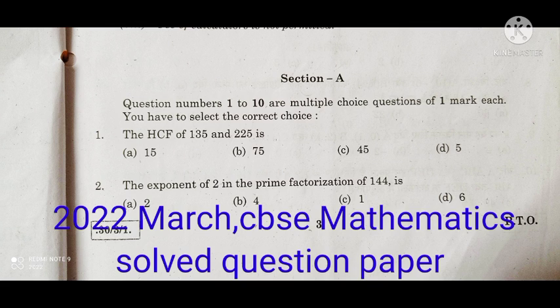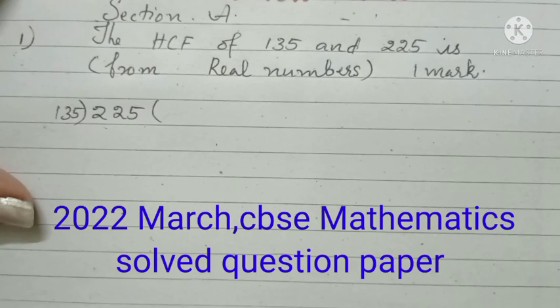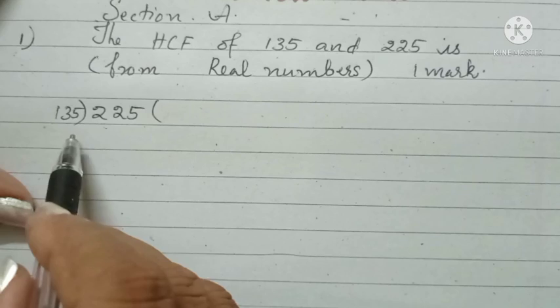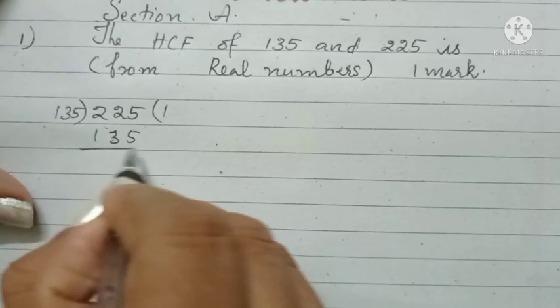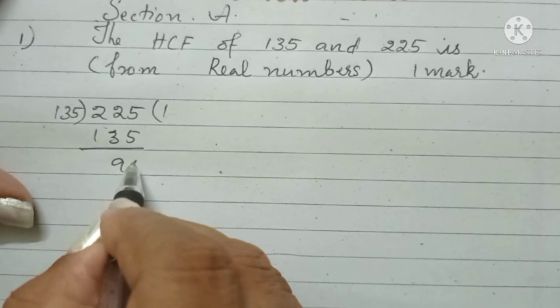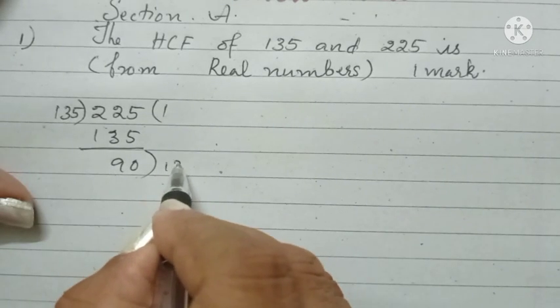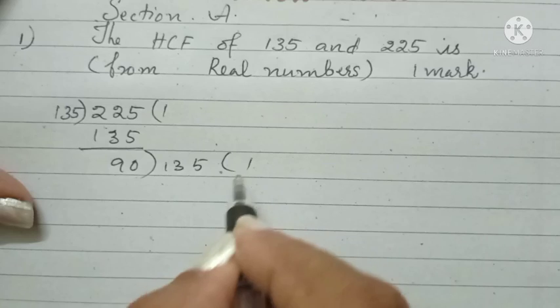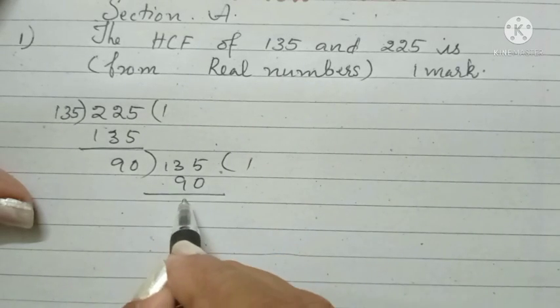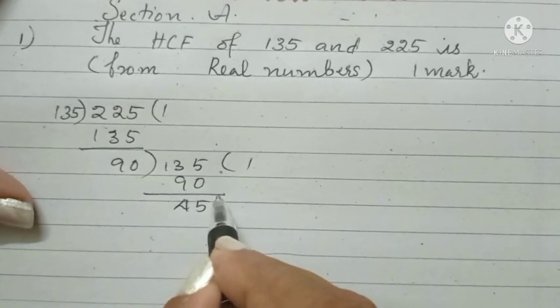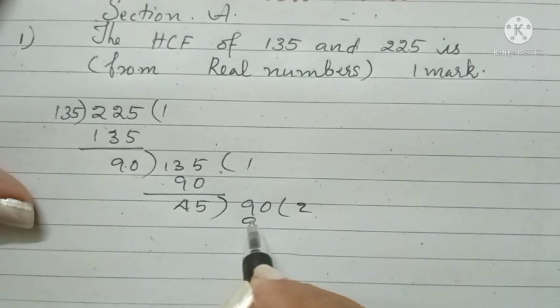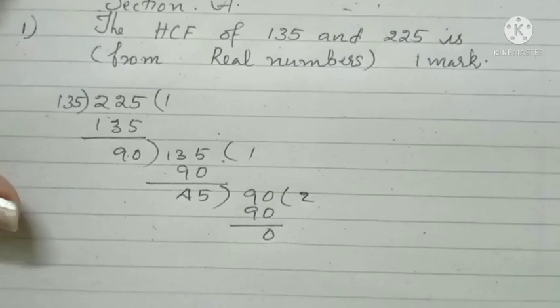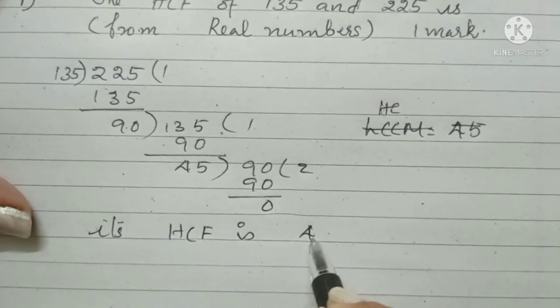The HCF of 135 and 225 is... Find the HCF of this one. 225 divided by 135 is 135. Remainder 90. Again we are dividing 135 by 90. One time 90. Subtracting 45 divided by 90, we will get 2 times 90. The remainder is 0. HCF is 45.